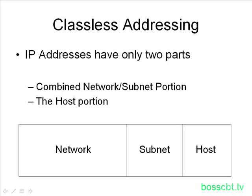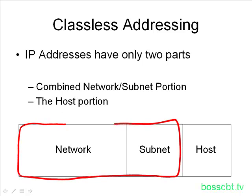Looking at an IP address that has been subnetted — we have our three sections — but the classless view says the network and the subnet portion, we're just going to look at them as one portion and combine them. The reason why is when the subnet portion is present, the router looks at not only the network portion but the subnet portion as well. In a sense, the network and subnet portions are equal in terms of how the router views them, because both are examined to determine where the packet should be routed. The subnet is essentially an extension of the network.